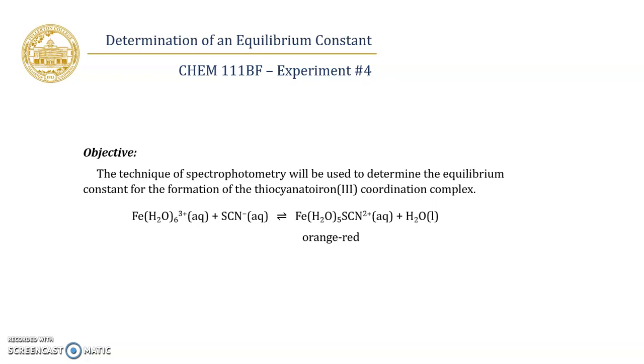This chemical equation has water on the complex side, so it's not uncommon to simplify matters by excluding water. We can write this equilibrium system as simply the reaction between iron(III) and thiocyanate to form the iron-thiocyanate complex.